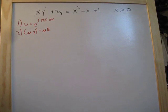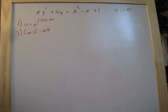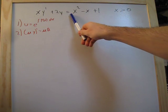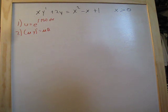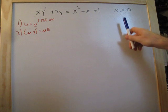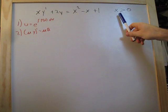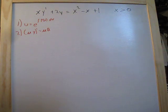Here we have a first order differential equation that's non-homogeneous. We can tell that because we have things on the right side — it's not set equal to zero. And we're asked to find the general solution of this differential equation knowing that x is greater than zero.